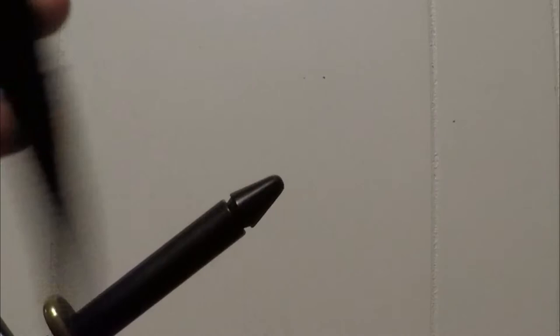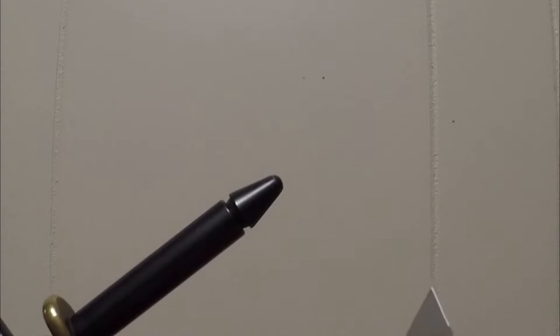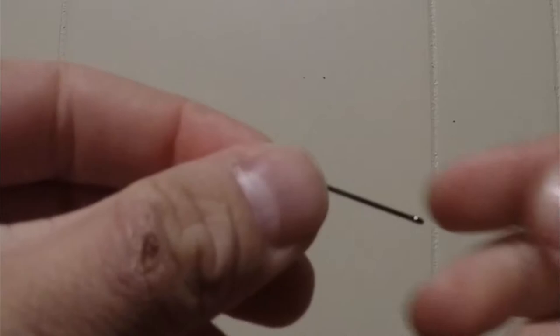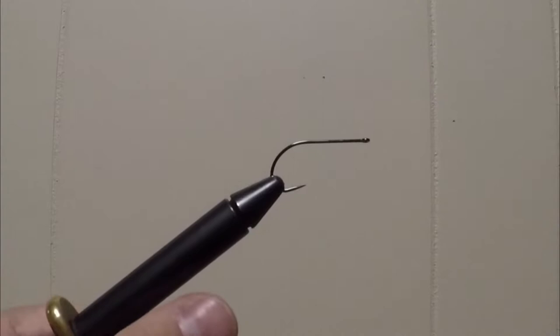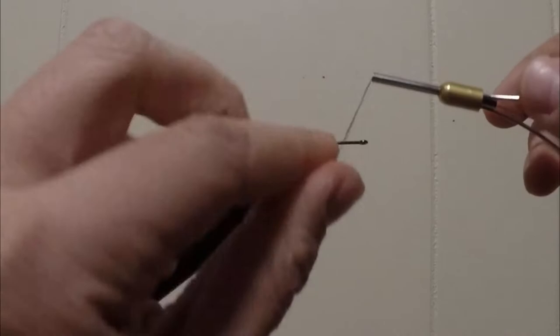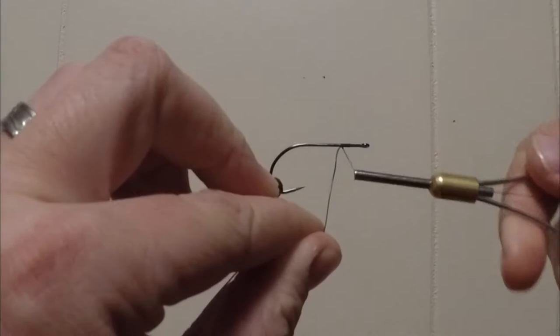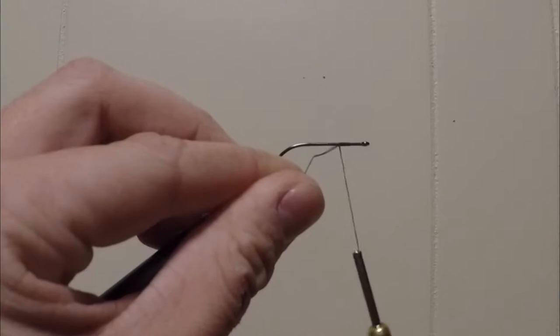I use the Gamagatsu B10S, the stinger. This is size 2. But if you want these bigger you can certainly tie them bigger. I just prefer a little bit smaller hook. So that's what I go with. Clamp it down good. About 2 eye lengths behind the eye, start your thread wraps. And just make a little bit of a wrap. You don't need a ton of space. Clip it or break it off.